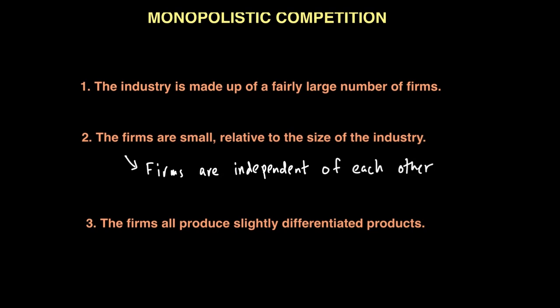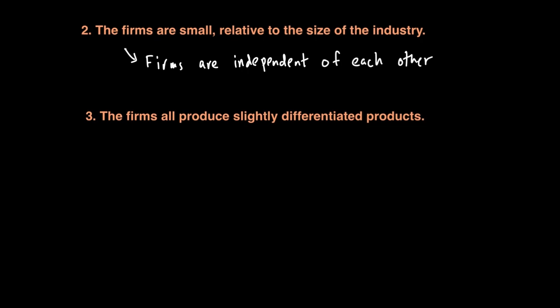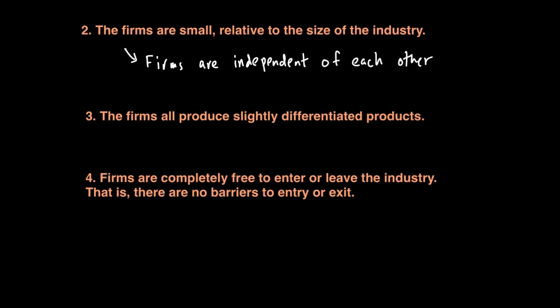This also means that a consumer can easily tell one firm's product from another, which means there could be what we call brand loyalty — because if we like one product more than another, we are likely to pay a higher price for it. That means there will be a relatively inelastic demand curve. Lastly, an important factor is that in this market structure, just like perfect competition, firms are completely free to enter or leave the industry, meaning there are no barriers to entry or exit.